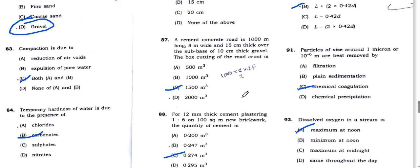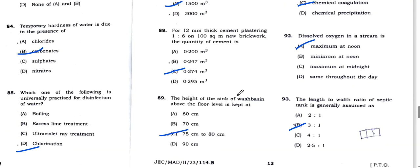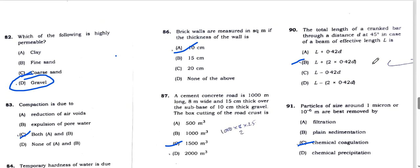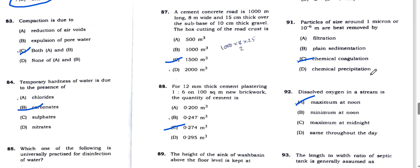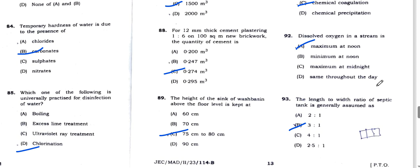For cement plastering 100 square meters on new brick wall, thickness 12mm and ratio 1:6, quantity of cement is 0.27 per cubic meter. The height of the sink of a washbasin above the floor level is kept at 75 or 80 centimeters. The total length of a crank bar is L minus 0.42D, option B. Particle size around 1 micron or 10^-6 meter is best removed by chemical coagulation.